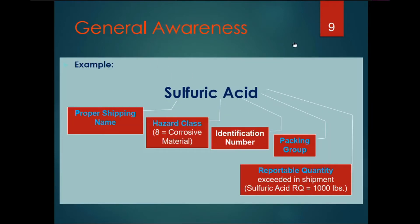General awareness includes an example: sulfuric acid — proper shipping name, hazardous class, identification number as crucial materials, packing group, and reportable quantity if applicable.